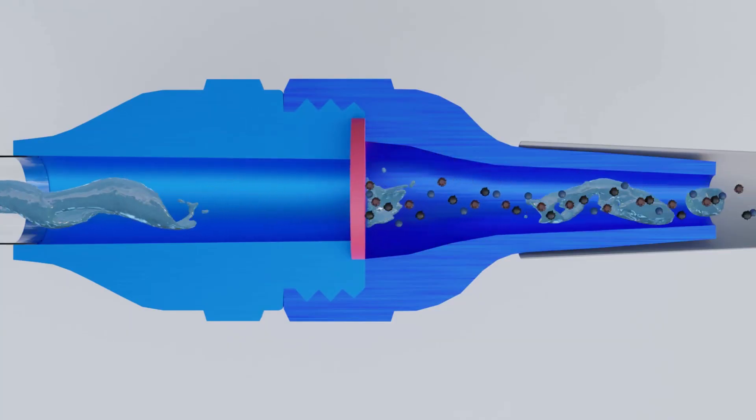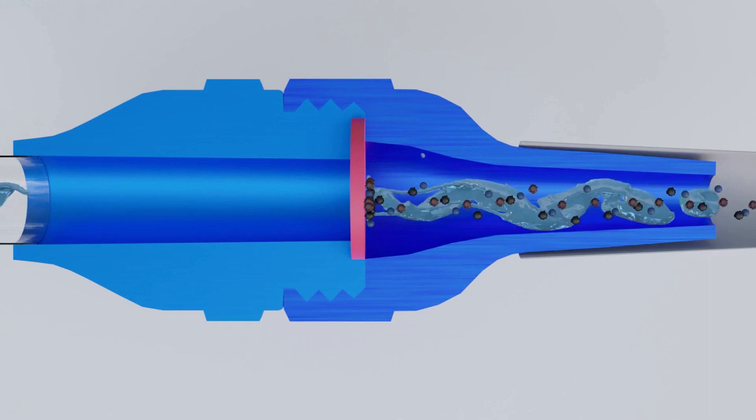However, if the suction is interrupted or blocked at any time, the check valve closes, creating a physical barrier preventing backflow.